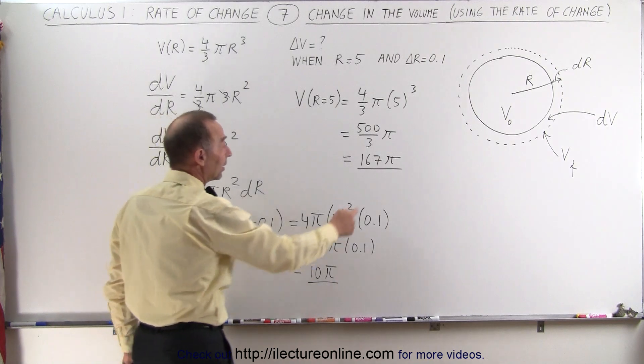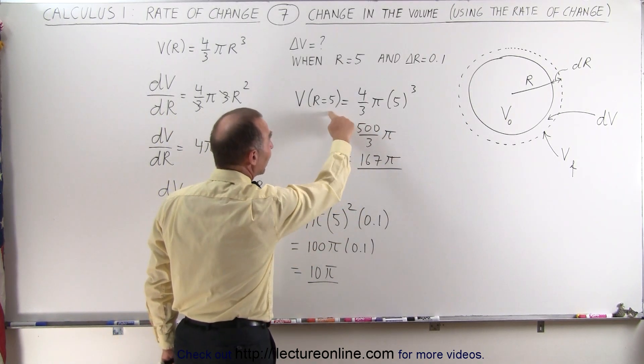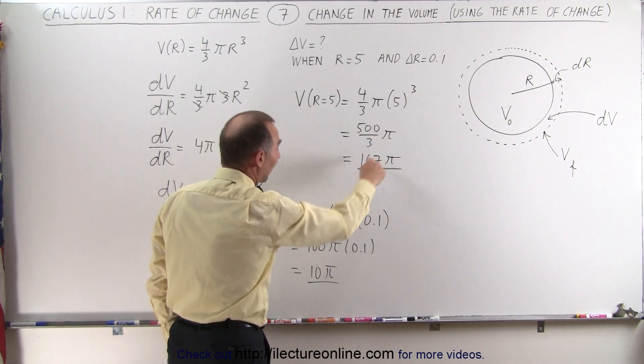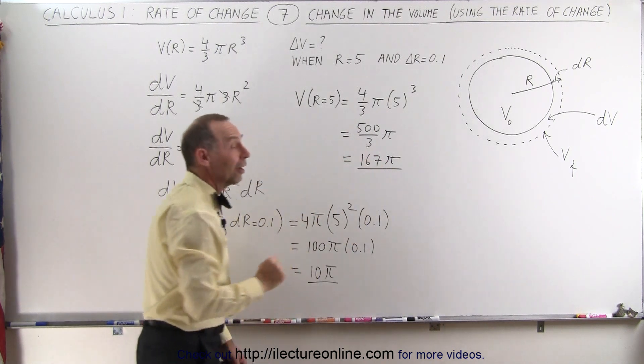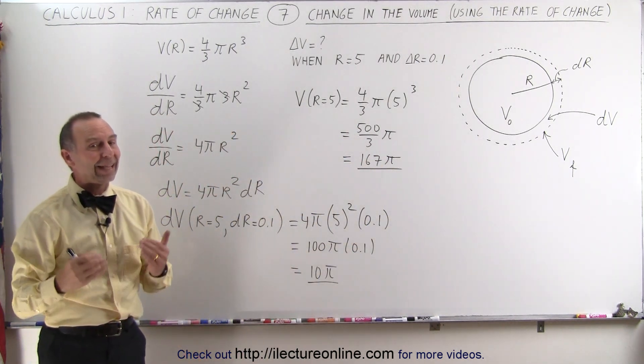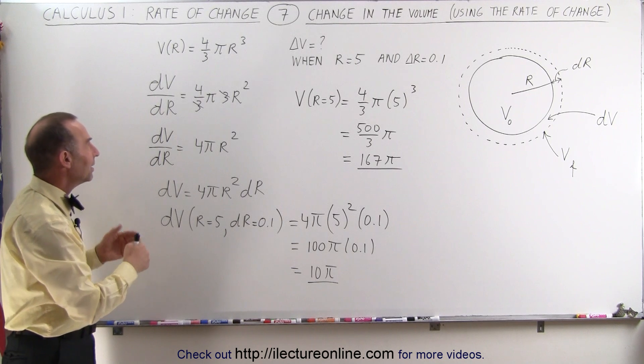What you could do is you can take a calculator, plug in 5.1 for the radius, and get the new volume. You'll find that it'll be approximately 177π. And that's why these equations are so handy.